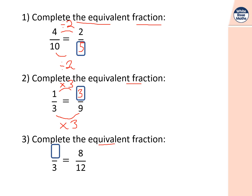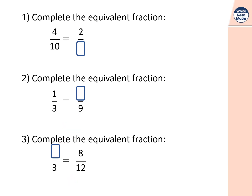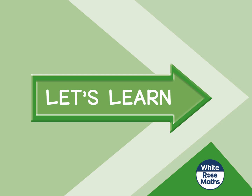Question three: something thirds equals eight twelfths. Three times something is twelve — three times four is twelve. So going backwards I divide by four: eight divided by four is two. So the answer is two thirds. The starter answers are: four tenths equals two fifths, one third equals three ninths, and two thirds equals eight twelfths.